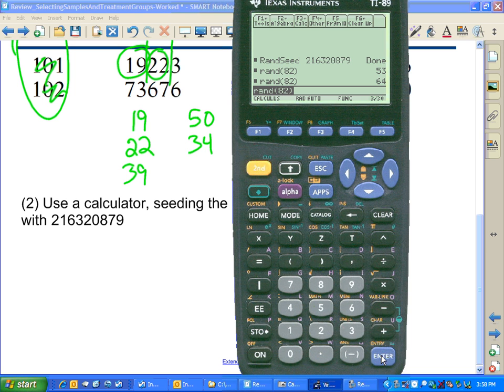We're choosing persons 53, 64, 44, 4, and 44 again. That's a duplicate. Can't do it. 44 again. 72.